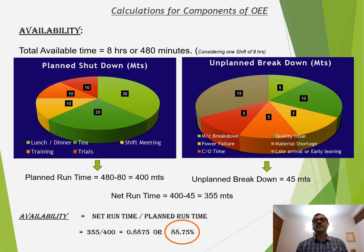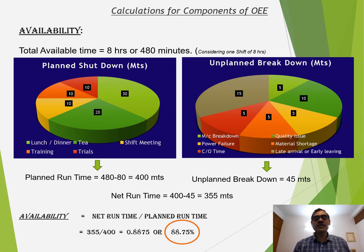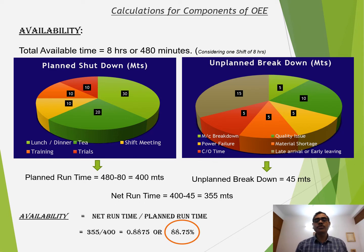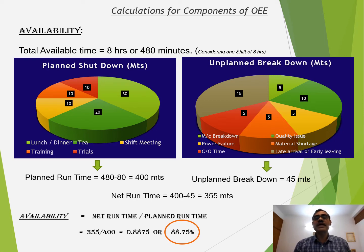So net runtime will be 400 minus 45 = 355 minutes. Now when I calculate availability, I do net runtime divided by planned runtime: 355 divided by 400 gives availability of 88.75%. Here you can see that if the unplanned breakdown is zero, my availability will be 100%. So this availability metric gives me the impact of unplanned breakdown.